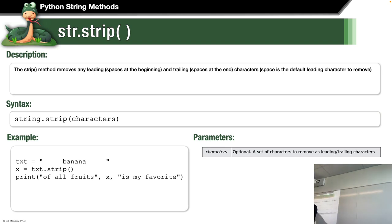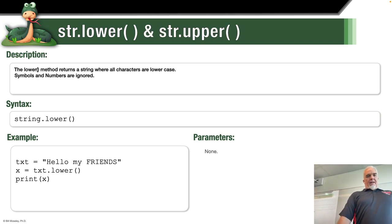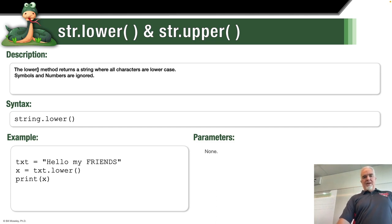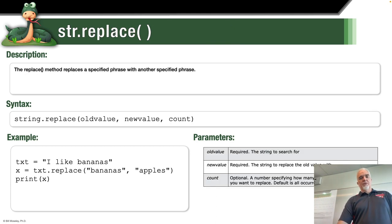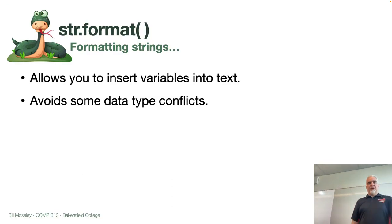You can see an example of strip here: we've got a text string with the word 'banana' but a lot of white space around it. If you assign it and strip it, it will just print the word 'banana' instead. And then we have str.lower and upper examples as well. Again, all of this is in the function reference.